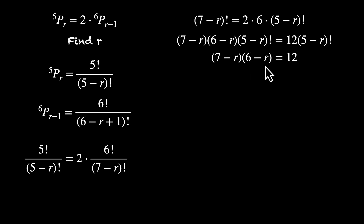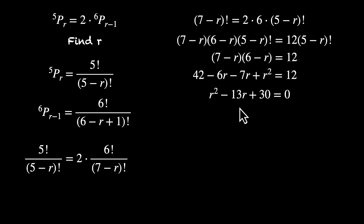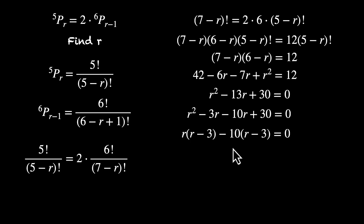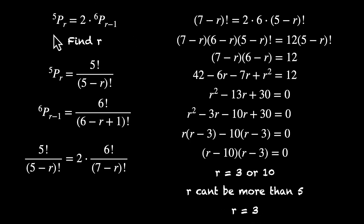We have (7-r)(6-r) equals 12. This is a product of two consecutive integers equal to 12, suggesting 4 and 3. Expanding gives r² - 13r + 30 = 0. Splitting: r² - 3r - 10r + 30 = 0, which factors as (r-3)(r-10) = 0. So r equals 3 or r equals 10. We can't pick 10 because r can't be more than 5 — you can't select 10 items from only 5. So r equals 3.